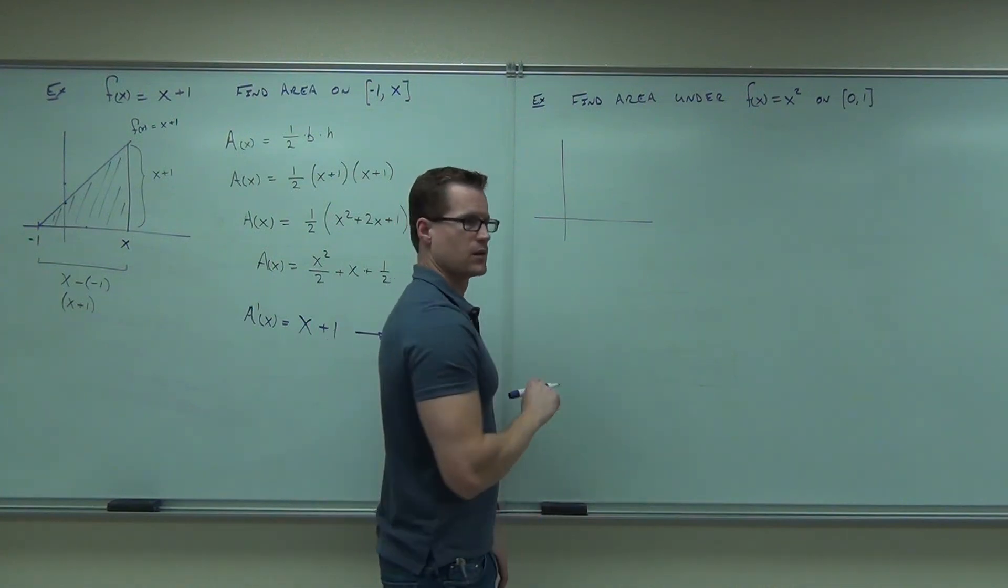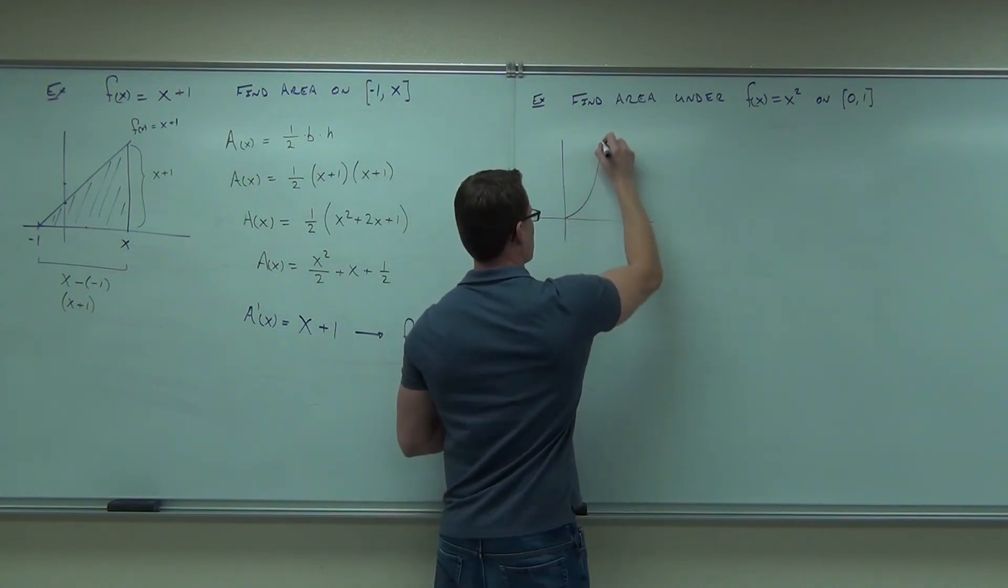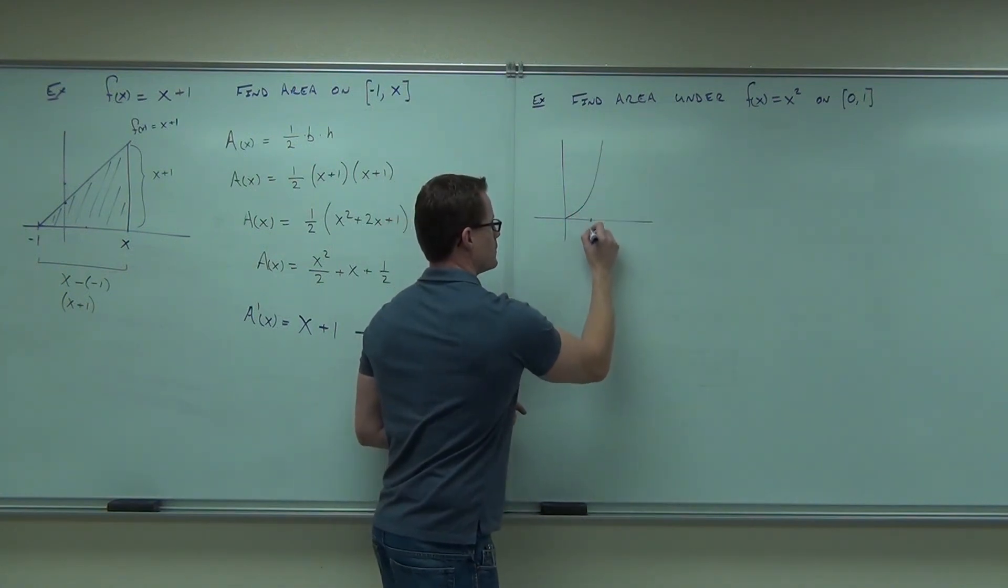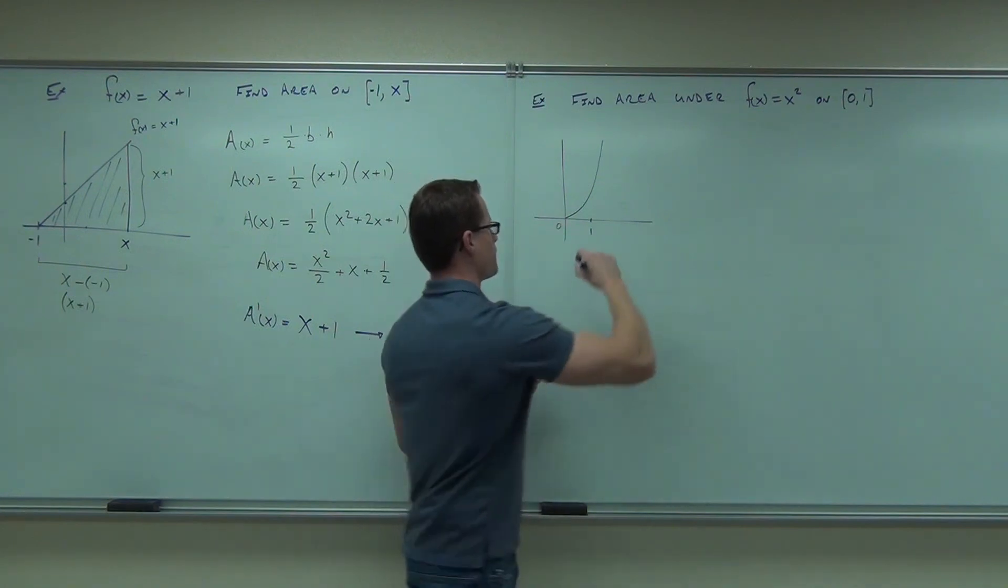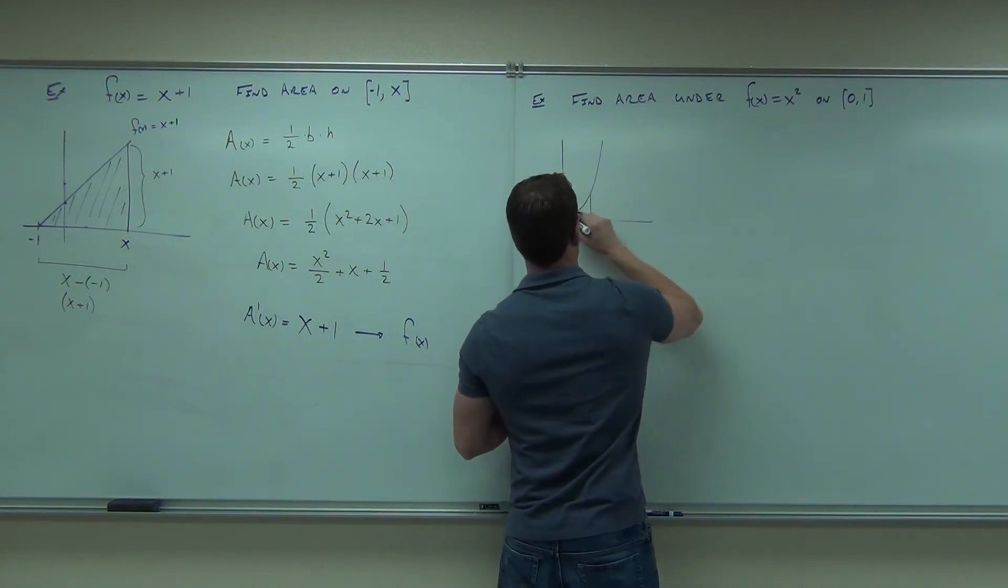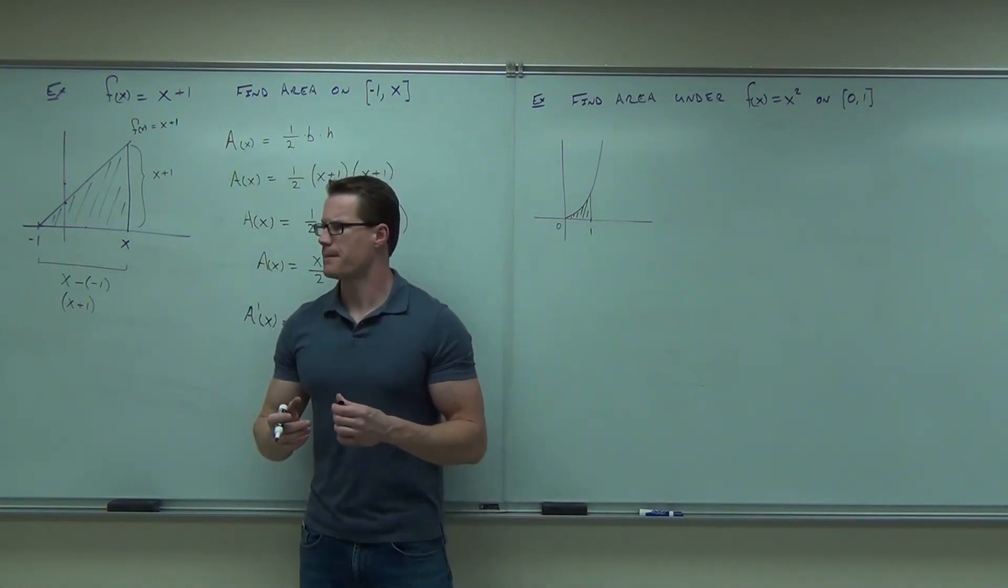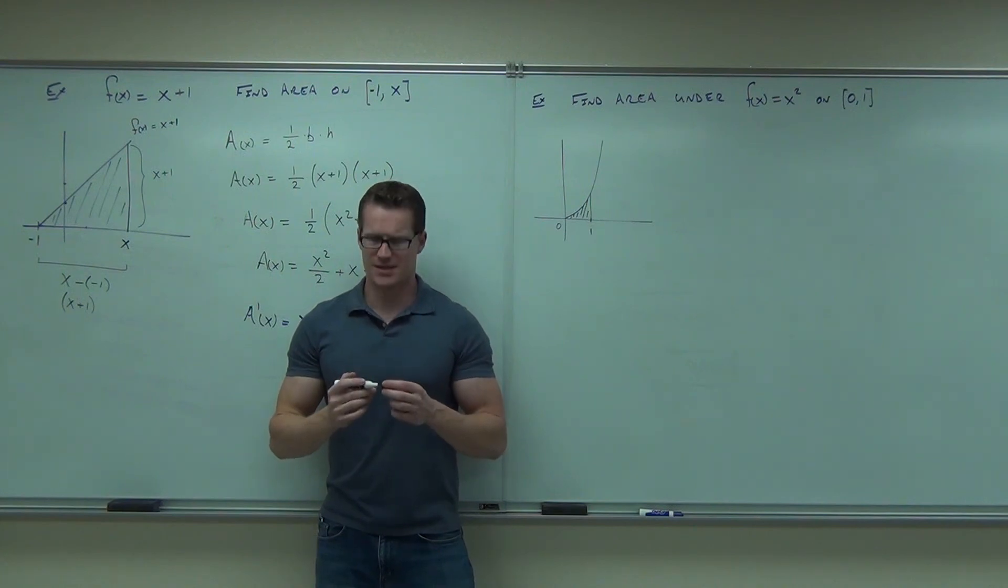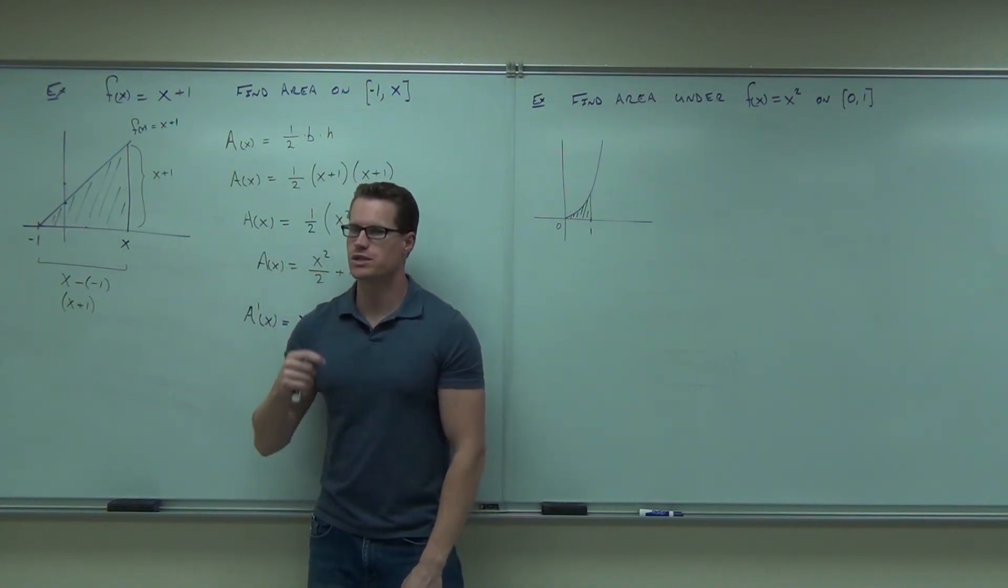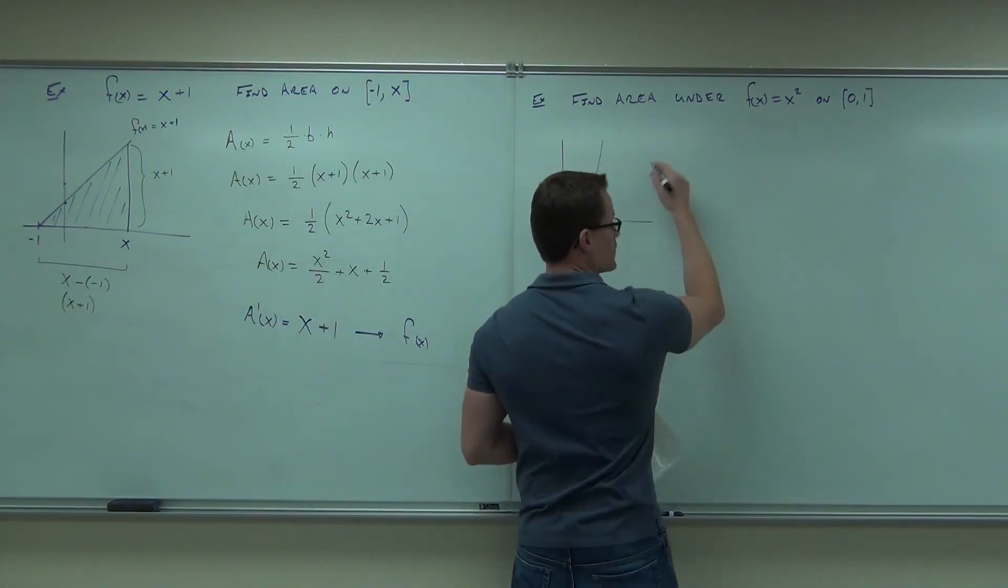You know what x squared looks like, right? Okay, now this is only between 0 and 1, so I'm not going to draw the left side of this. I'm just going to draw that. Do you all see that that's the area we're talking about right there? Yeah, I know. Is that a triangle? Is it an exact triangle? No. Okay. So we can't do the same thing, but we're going to use the idea.